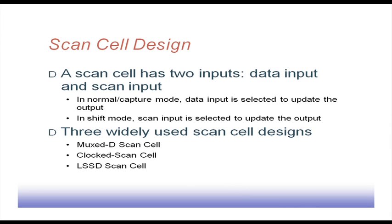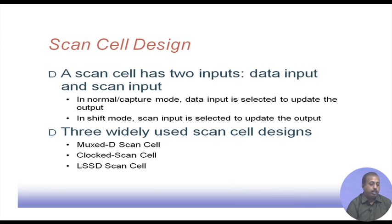How do we convert a normal flip-flop or normal latch — a normal sequential element — into a scan cell? A scan cell will have two inputs: one is called a data input and another is called a scan input. In normal mode or capture mode, the data input is selected to update the output. In shift mode, the scan input is selected to update the output. There are three widely used scan cell design techniques: the Muxed-D scan cell, the clocked scan cell, and the LSSD scan cell.